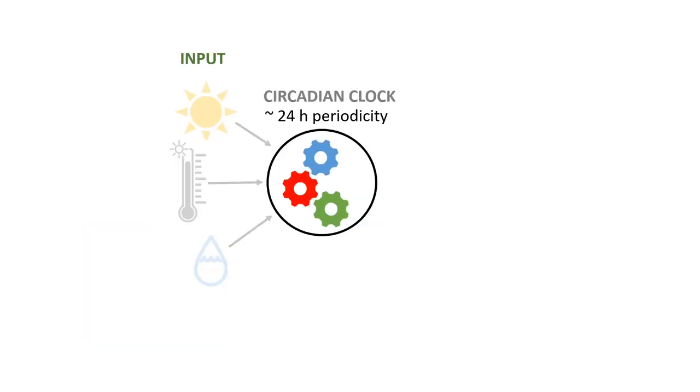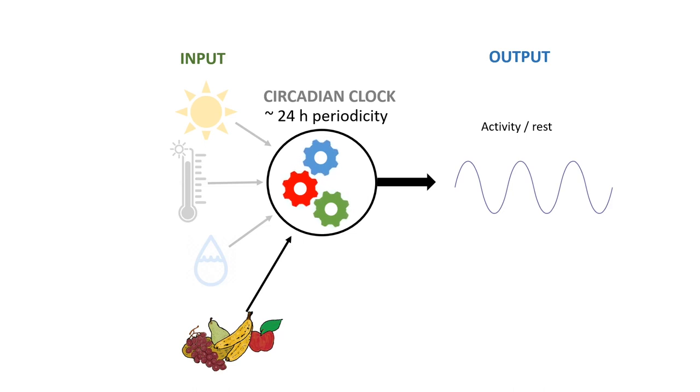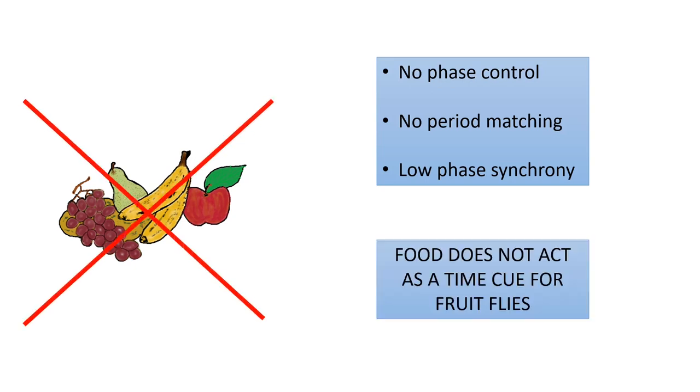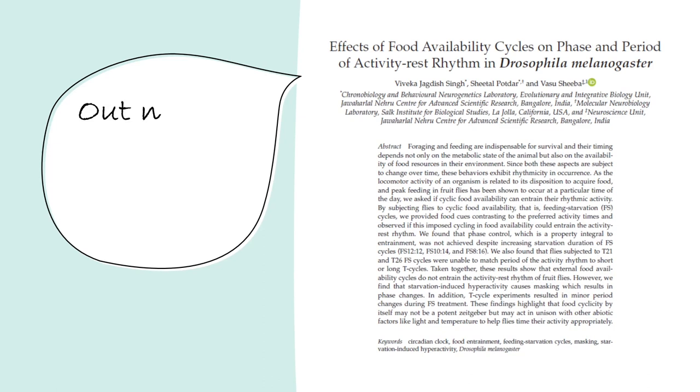We used a classical approach to answer if cyclic food availability can act as a time cue for the activity clock of fruit flies. In our study, we tested three basic criteria: phase control, period matching, and phase synchrony to conclude that food availability cycles do not act as a reliable time cue for fly activity rhythms. For more details on this work, please find the details of our paper listed below.